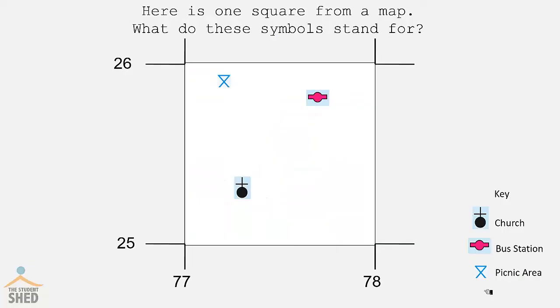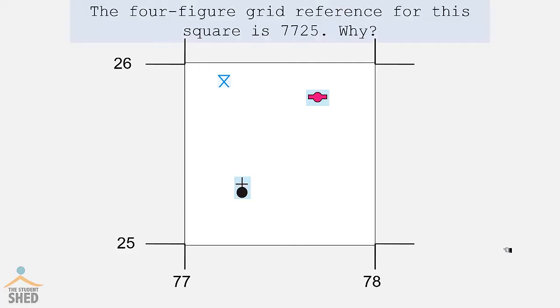Here is one square from a map. What do these symbols stand for? Let's look at the key. We have the church, the bus station, and the picnic area. The four-figure grid reference for this square is 7725. Why is that?